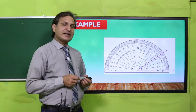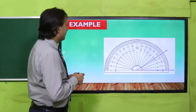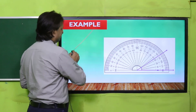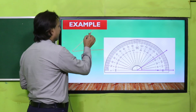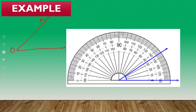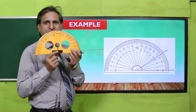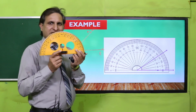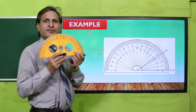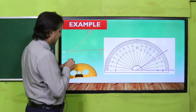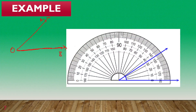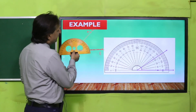Here is an example. You will be given an angle such as angle AOB. To measure it, first take your protractor and place its center point — the midpoint of the baseline — on the vertex of the angle. Then align the baseline with arm OB. Once the midpoint is on the vertex and the baseline is aligned, you will see a reading — for example, 51 degrees.